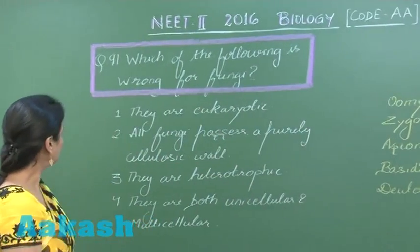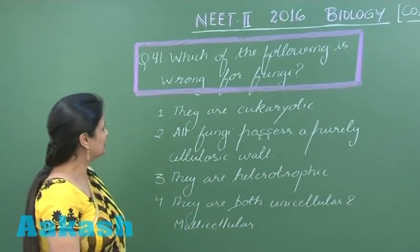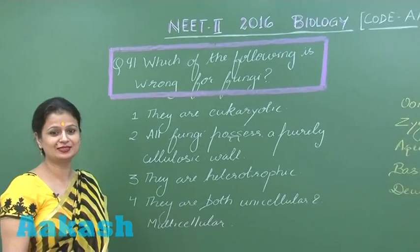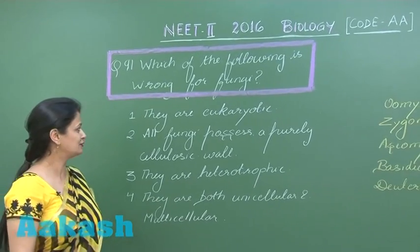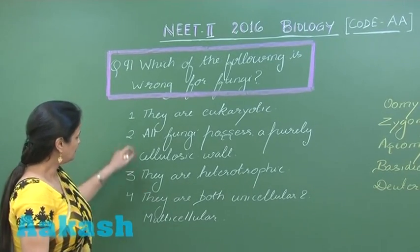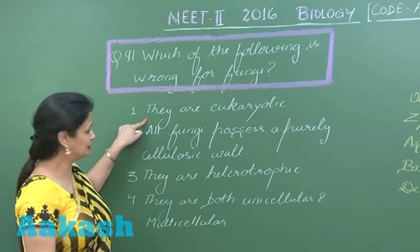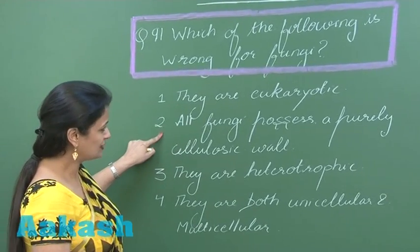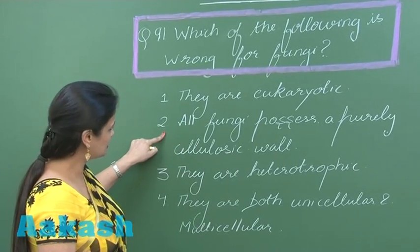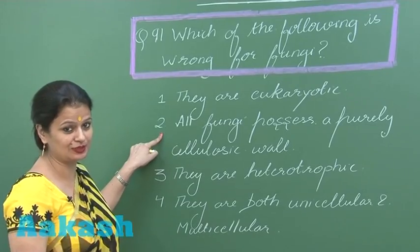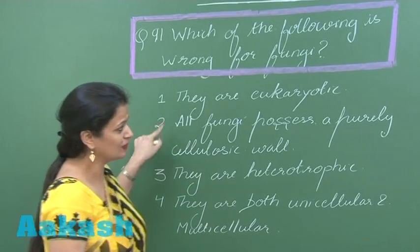Starting with question 91: which of the following is incorrect for fungi? Option one — they are eukaryotic — this is right. Option two — all fungi possess a purely cellulosic wall — this is wrong.